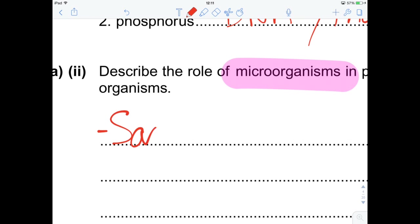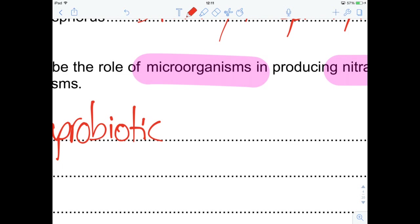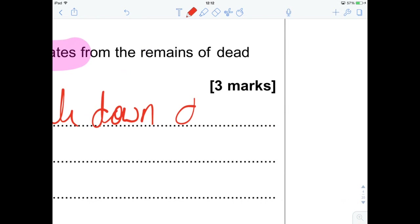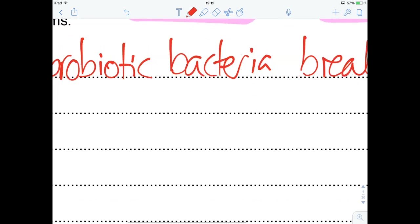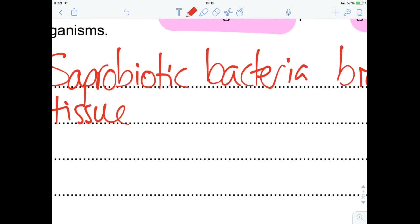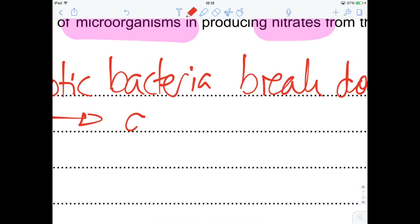So, first mark, saprobiotic bacteria, they're going to break down the dead tissue. Break down dead tissue. And they're going to form ammonia or ammonium, whichever one you want to go for. Nice and straightforward.